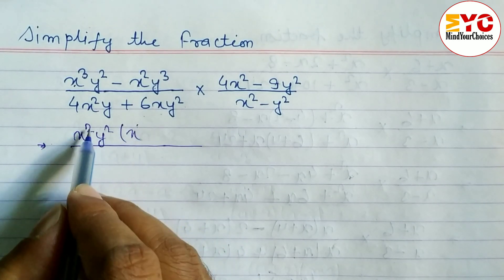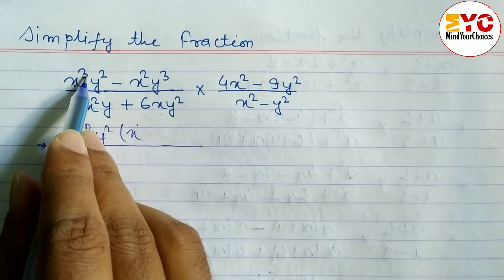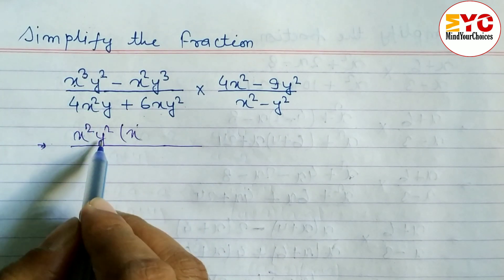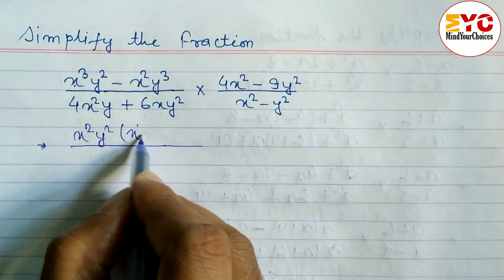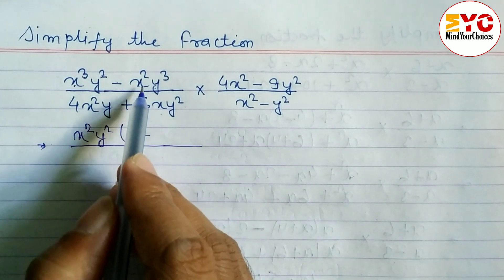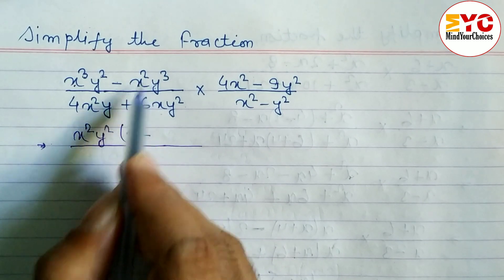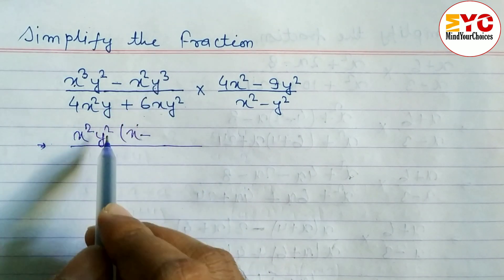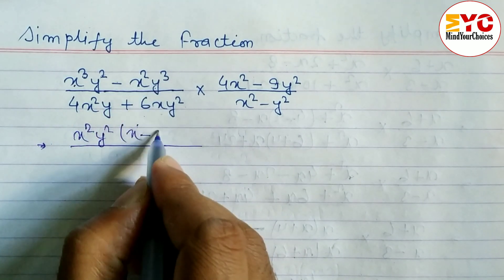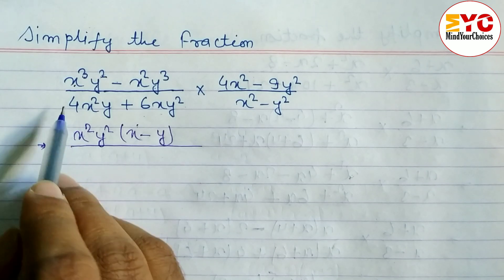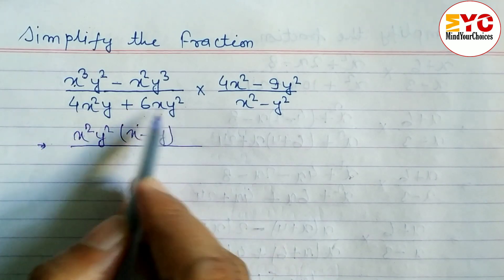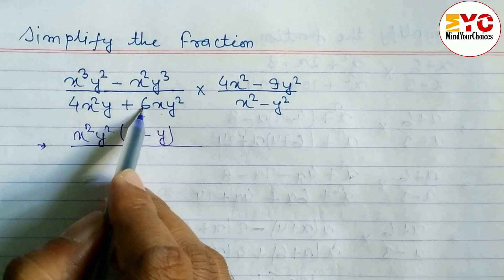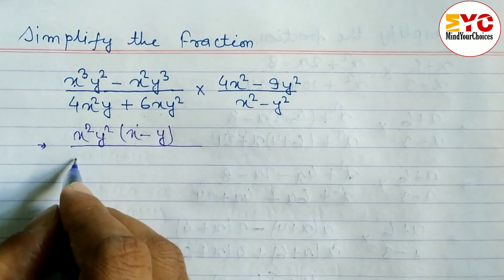Because the base is the same, in the exponent we add the powers: 2 plus 1 gives 3. Then y square is already taken common. Now we write minus, with x square common. From y cube, y square is common, so remaining is y.